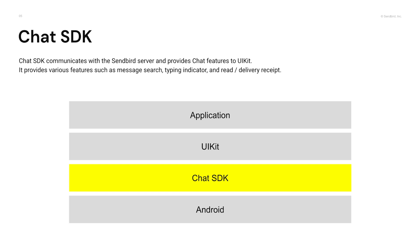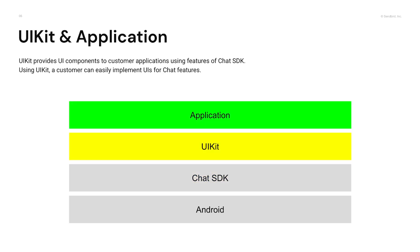Chat SDK communicates with the Sendbird server and provides chat features to UIKit. In addition to managing channel data and message data, it provides various features such as message search, typing indicator, and read-receipt and deliver-receipt. UIKit provides UI components to customer applications using features of Chat SDK, so a customer can easily implement UIs for chat features.